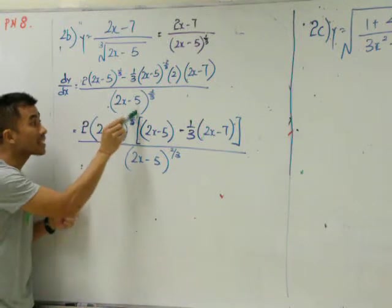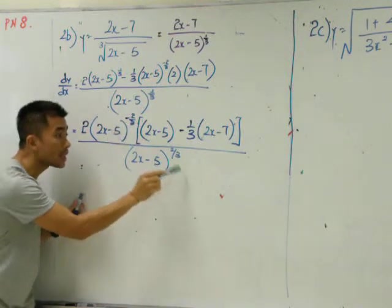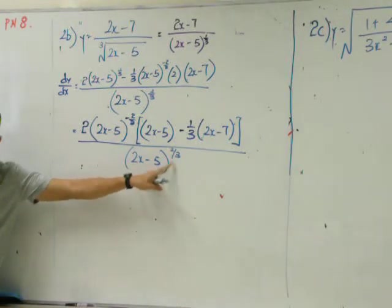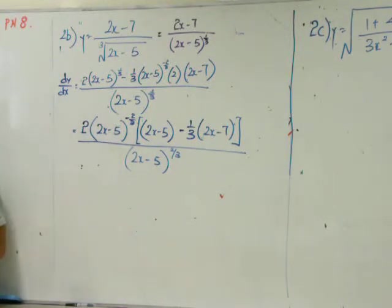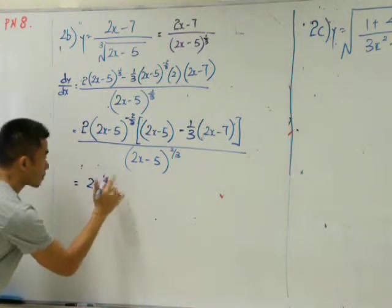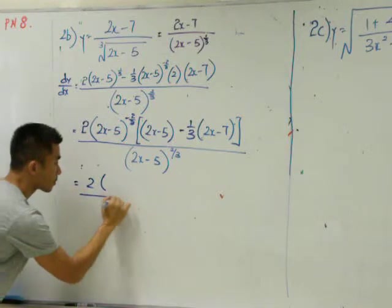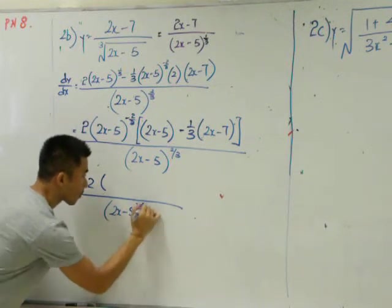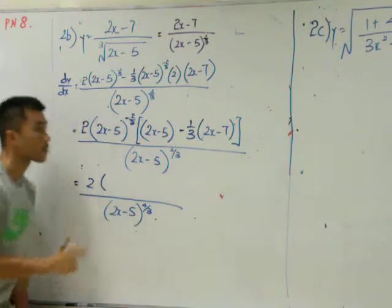Now, this is negative. When you bring it down, the power becomes positive 2/3. Add to another 2/3. How many are there? 4 over 3.